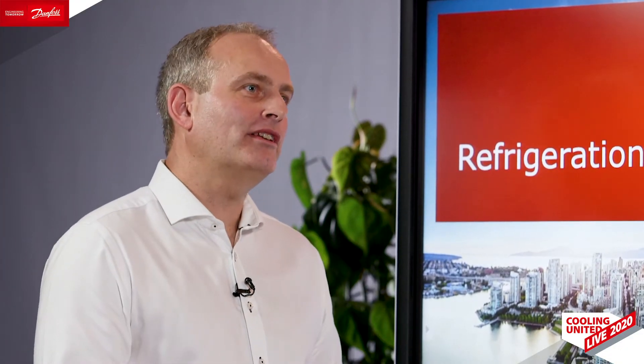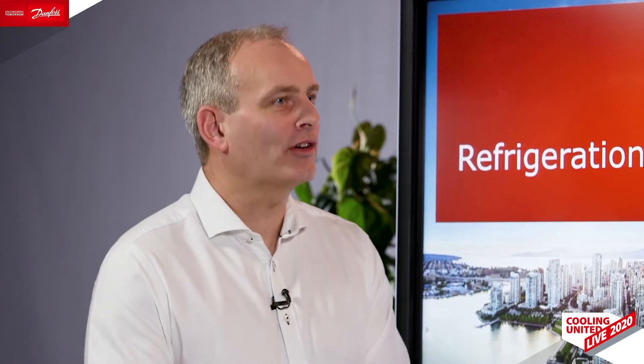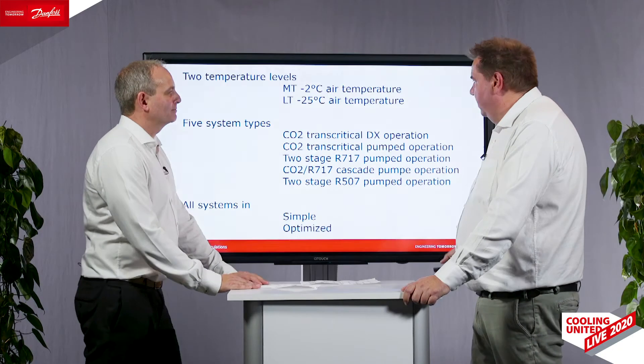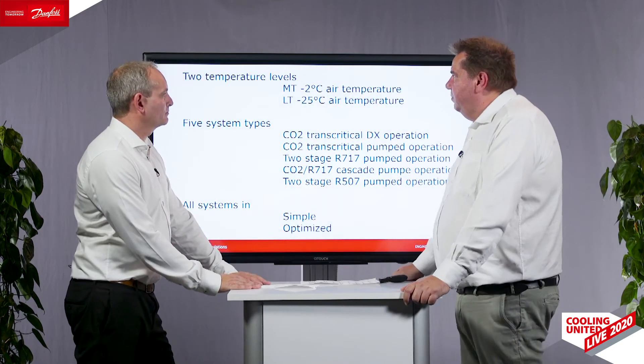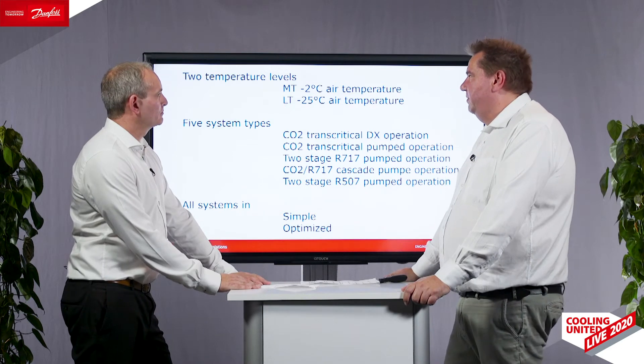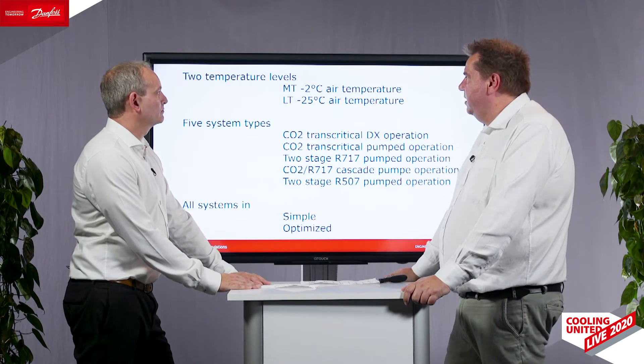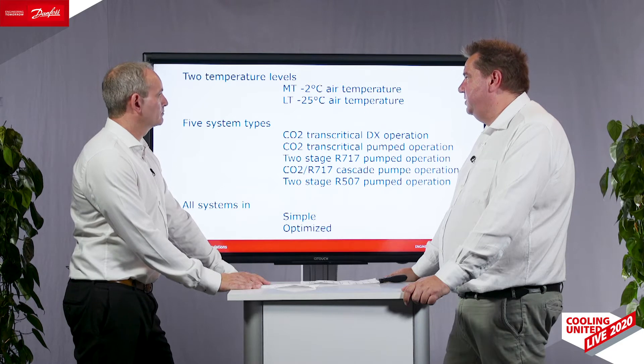Can you tell us more about the systems and the conditions under which the calculations were made? We started out saying that we wanted to model systems that had two temperature levels. We decided on a minus 2°C air temperature at the medium temperature and a minus 25°C at the low temperature. The evaporating temperature comes from this air temperature, but there's a difference in temperature difference from DX to flooded systems, and that gave us some differences.